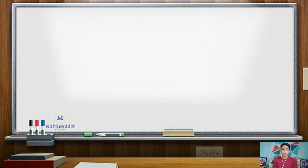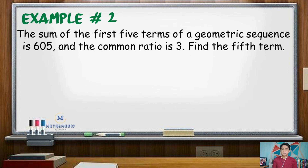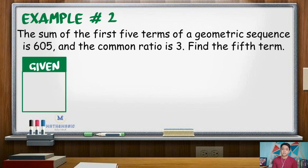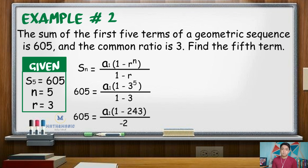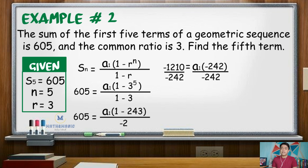For our second example, the sum of the first 5 terms of a geometric sequence is 605 and the common ratio is 3. Find the fifth term. We will first compute for the first term, a sub 1, given that s sub 5 equals 605 and r equals positive 3. Using the formula, 605 equals a sub 1 times quantity 1 minus 3 raised to 5, all over 1 minus 3. Since 3 raised to 5 is 243, then 1 minus 243 is negative 242, and the denominator is negative 2. By cross multiplication, 605 times negative 2 is negative 1010, equal to a sub 1 times negative 242. Dividing both sides by negative 242, the value of a sub 1 is equal to 5.